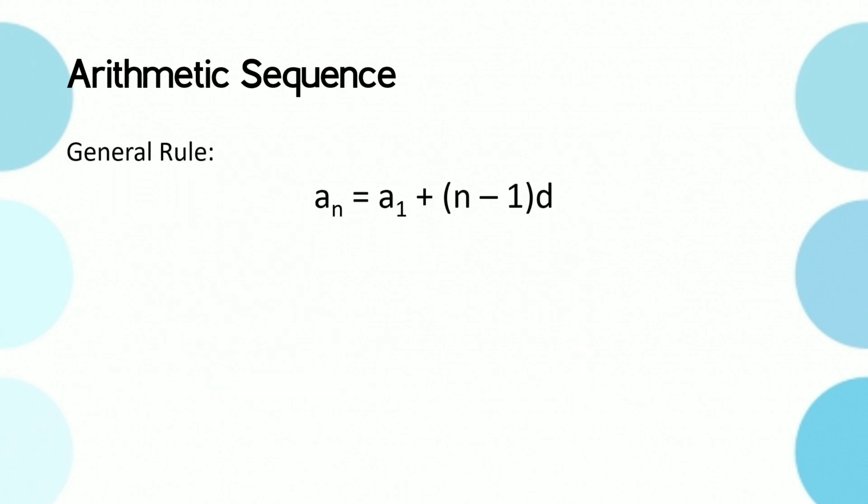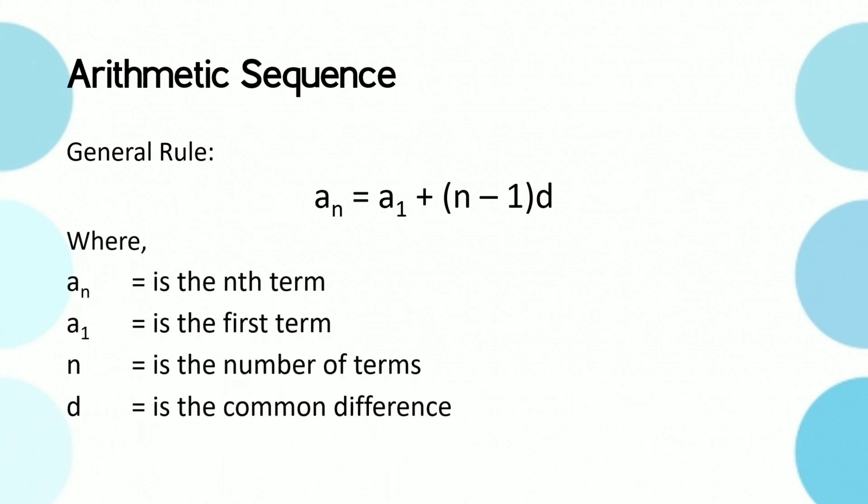In this section we will talk about the general rule of an arithmetic sequence. That is a_n = a_1 + (n - 1)d, where a_n is the nth term, a_1 is the first term, n is the number of terms, and d is the common difference.